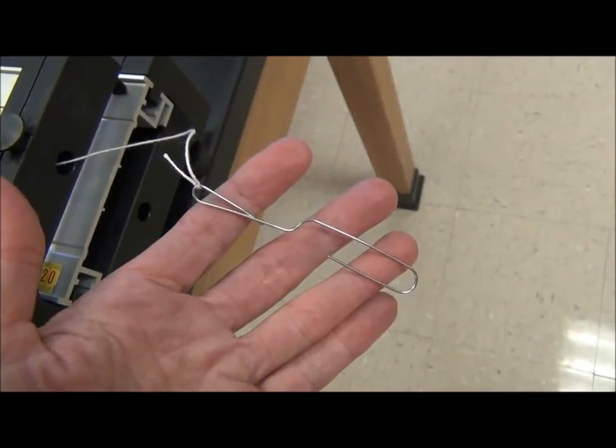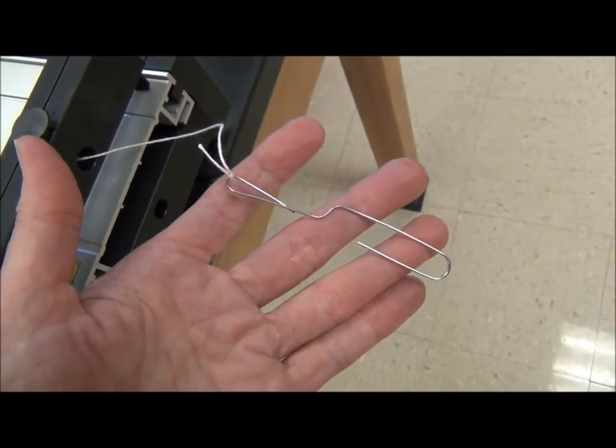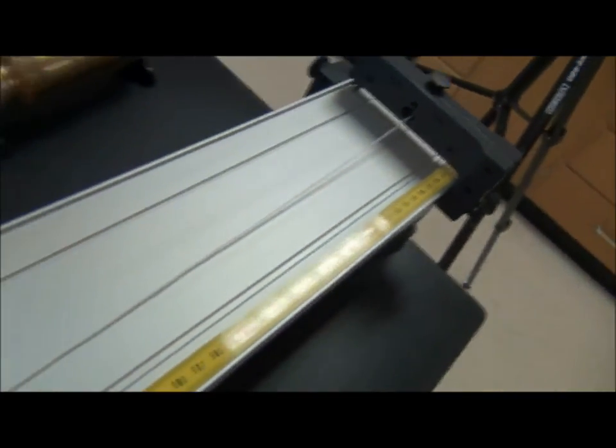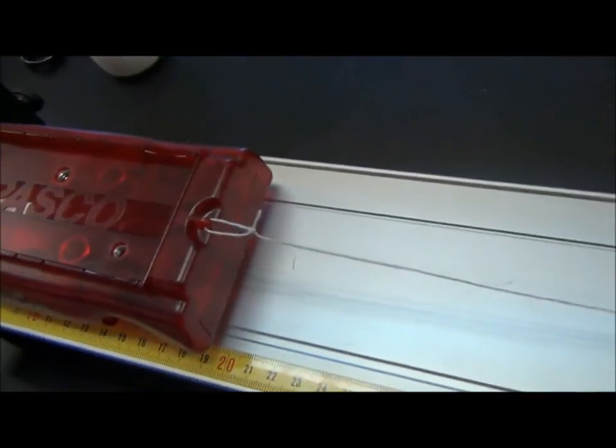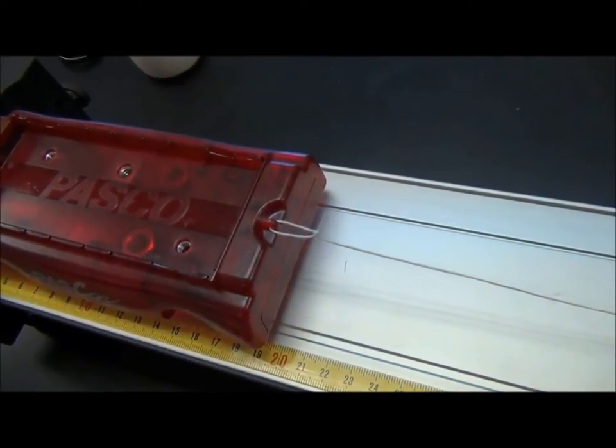Take a paper clip and bend it so that it looks like a fish hook. Close one end so that the string will not come loose. Thread the string through the hole in the end of the end stop on the pascar track. Tie the other side of the string to your pascar. If you tie it in a loop, it will be easier to remove it at the end of the lab.